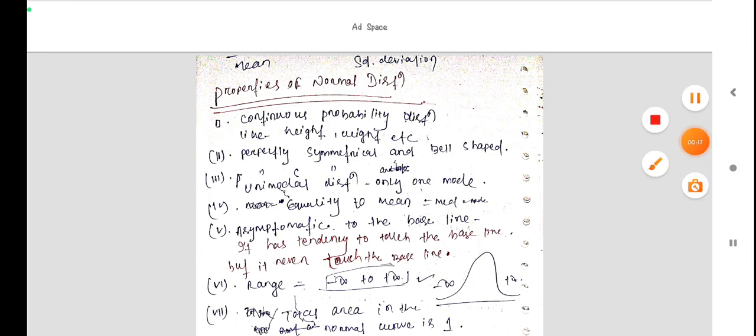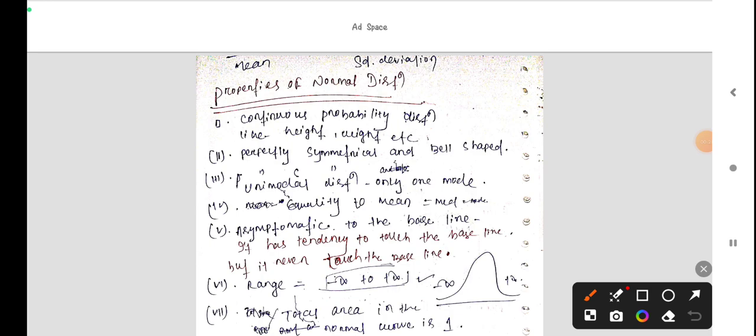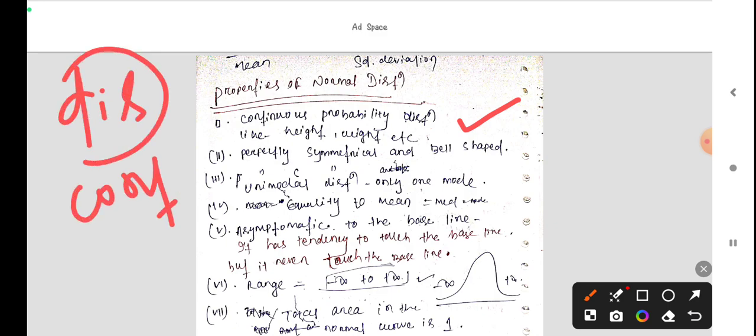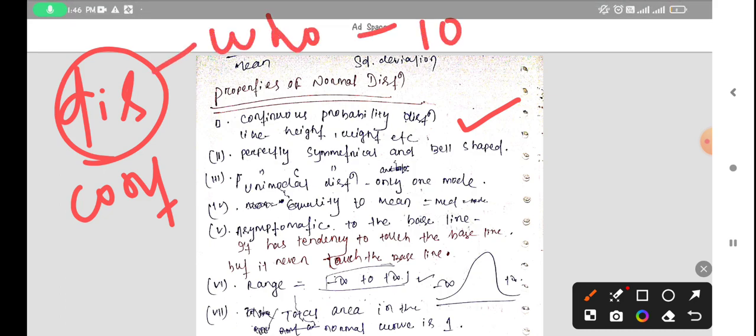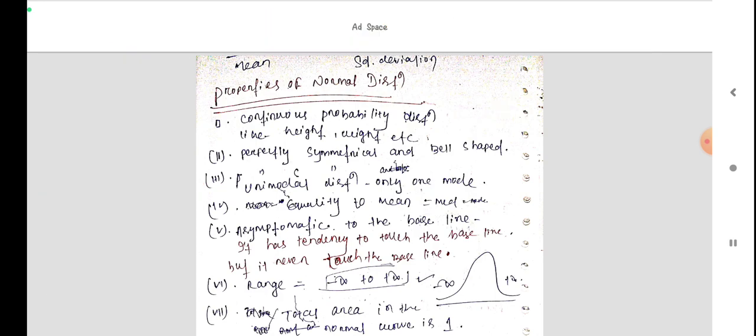Properties of normal distribution. First, this is continuous probability distribution. Continuous means, yesterday we talked about discrete series and continuous series. Discrete means that counts the whole numbers.